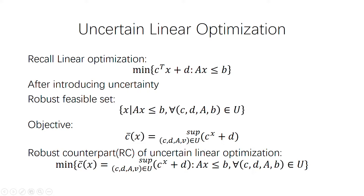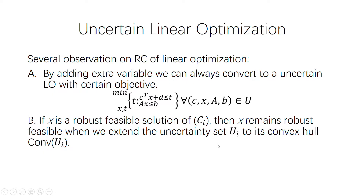In conclusion, the robust counterpart, defined as a conversion from the uncertainty optimization to a deterministic equivalent optimization problem, can be shown for linear optimization. We make some important observations about the robust counterpart of linear optimization.